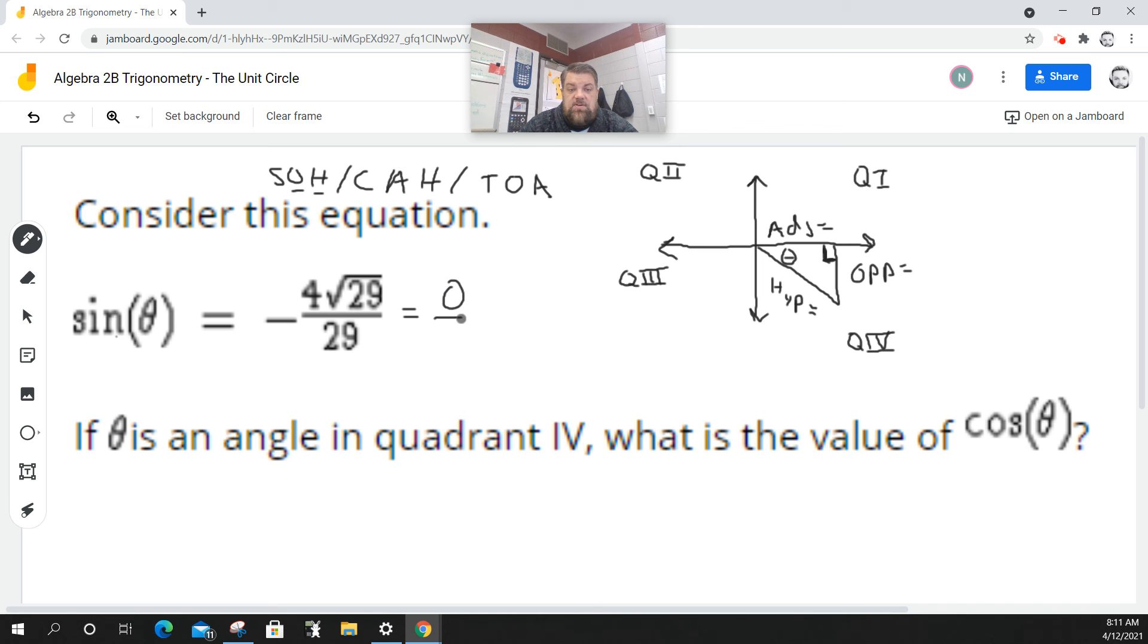So this is going to be the opposite over the hypotenuse. But whenever you see something like this, the square root 29 over 29, that means that you rationalize the denominator. So in reality, that's really just negative 4 over the square root of 29. That's all that means.